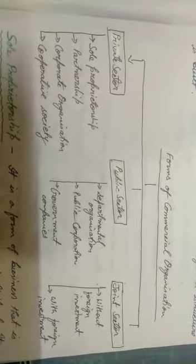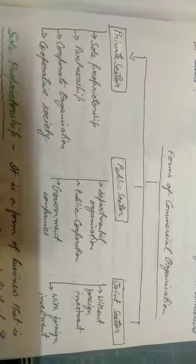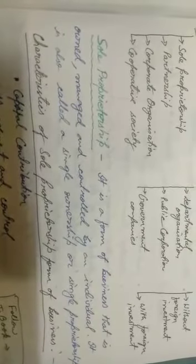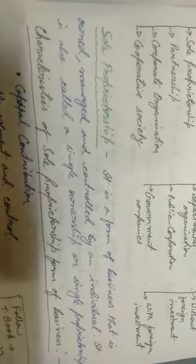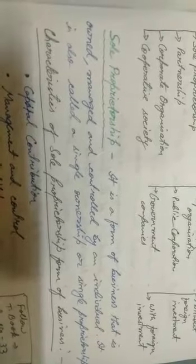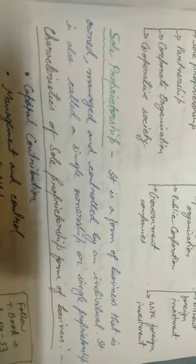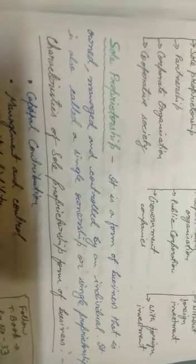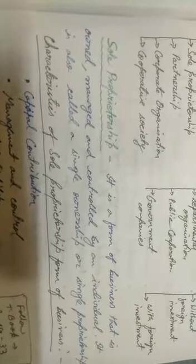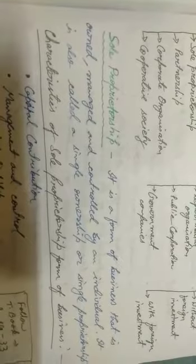Now we will be learning about sole proprietorship, which is part of the private sector. The word sole means single, so it can also be called single proprietorship. It is a form of business that is owned, managed, and controlled by an individual. It is also called single ownership or single proprietorship — the business is owned by only one person.